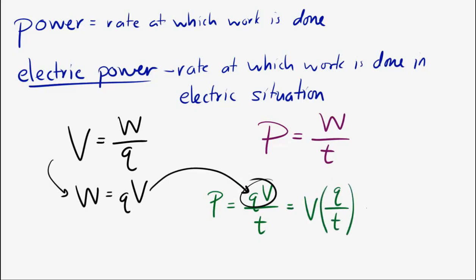And the amount of charge that's being moved per time, that is equal to the current. So the electrical power is equal to the current times the potential difference.